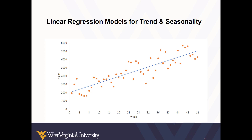A scatter plot is a good place to start to evaluate whether or not there seems to be a time series relationship. Here we plot time on the x-axis and sales on the y-axis, and we generally see a positive trend. So we're off to a good start — this seems like a good fit for a linear time series model.